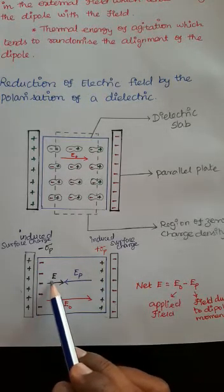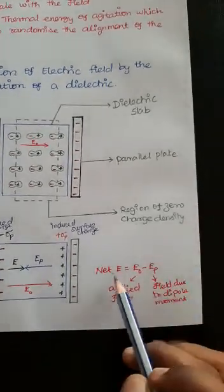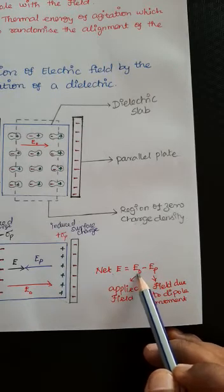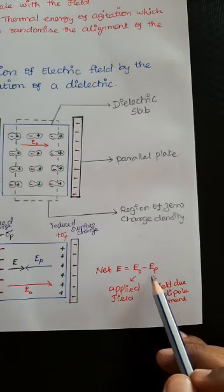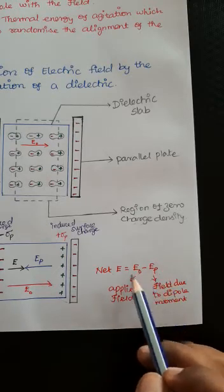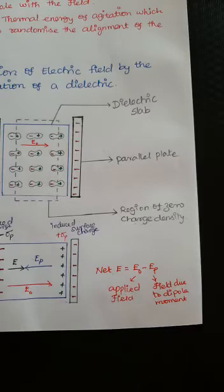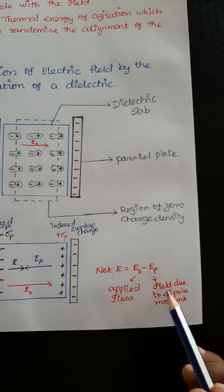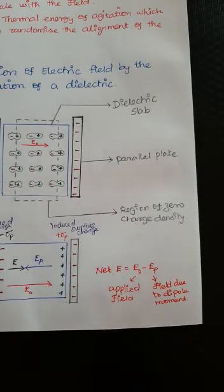Therefore, the net electric field E inside the dielectric is equal to E0 minus Ep, where E0 is the applied electric field and Ep is the electric field due to the induced dipole moment. By subtracting Ep from E0, the net electric field is reduced — that is why we say the electric field is reduced by the polarization of the dielectric.